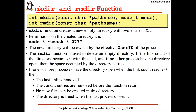The mkdir function creates a new empty directory with two entries — dot and double-dot — and the permissions on the created directory are mode AND NOT of umask AND 0777. The new directory will be owned by the effective user ID of the process. Similarly, rmdir is used to delete an empty directory. If the link count reaches zero and no other process has the directory open, the space is freed. If processes still have it open, the dot and double-dot entries are removed and the directory is freed when the last process closes it.